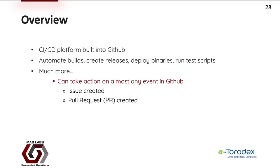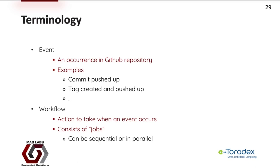Now let's pivot back to CI/CD workflows and look at GitHub Actions in detail. GitHub Actions is the CI/CD platform built into GitHub. It can automate our builds, create our releases, deploy our binaries, run our test scripts on target hardware, and much more. GitHub Actions can perform tasks in response to almost any event on GitHub, such as when an issue is created or when a pull request is created. Let's talk through some of the terminology: an event is almost any occurrence in our GitHub repository, such as when a commit is pushed up or when a tag is created.